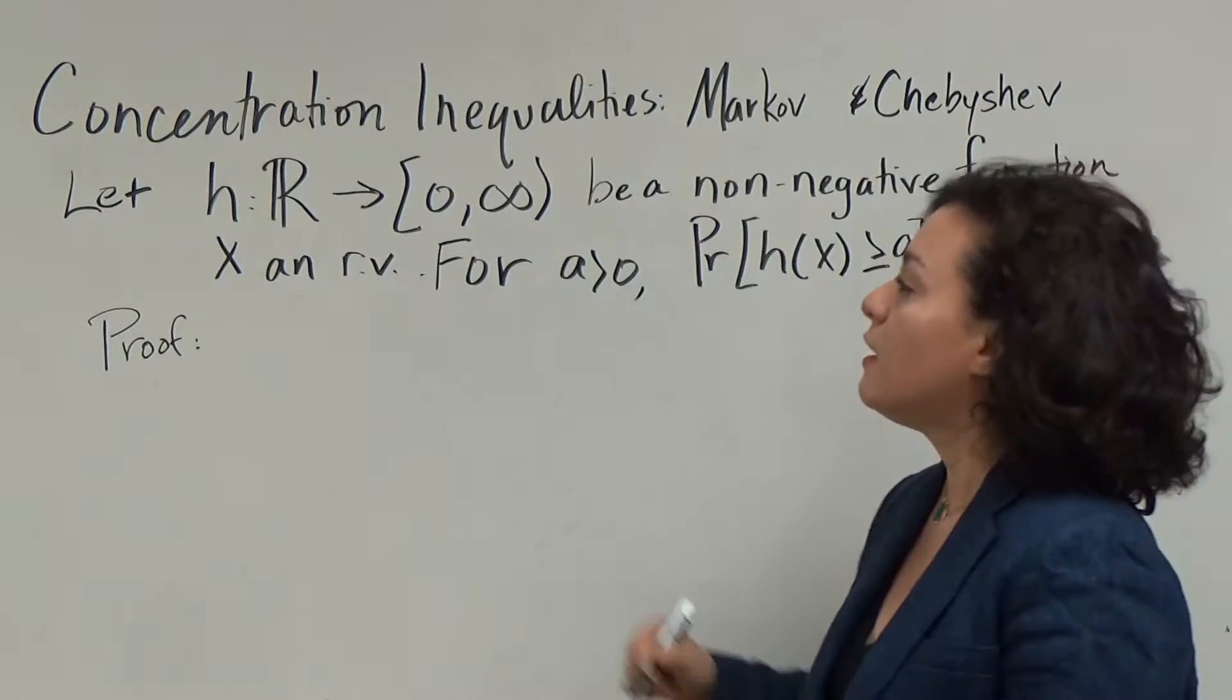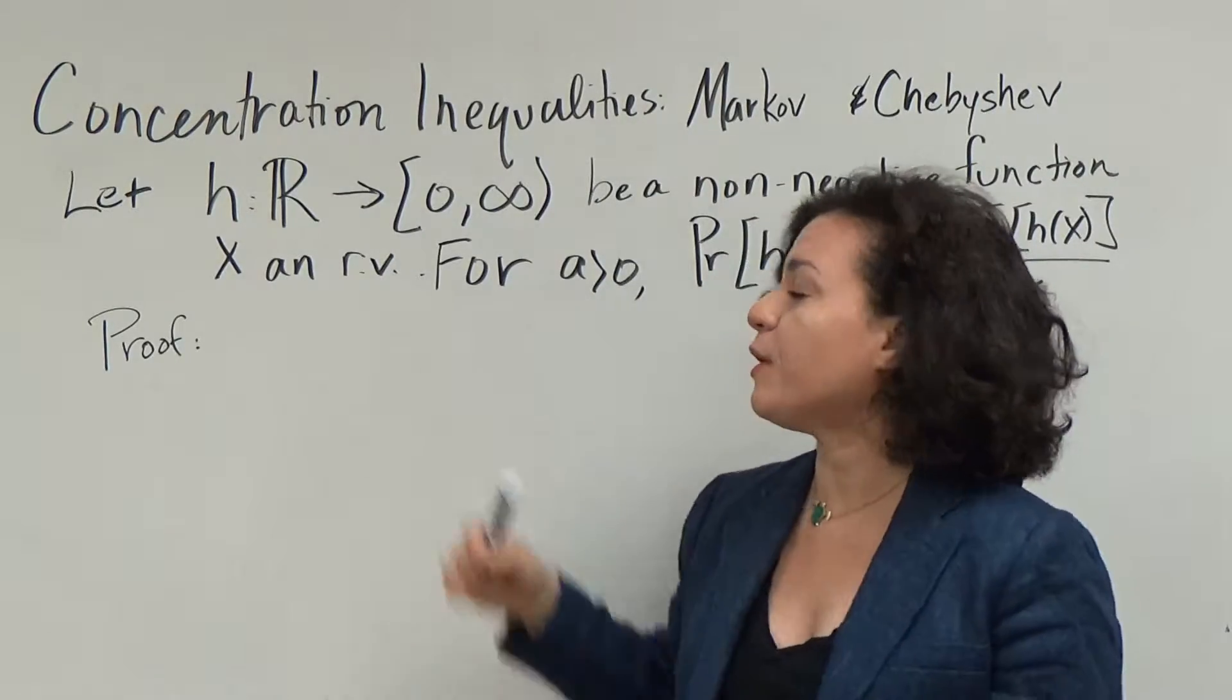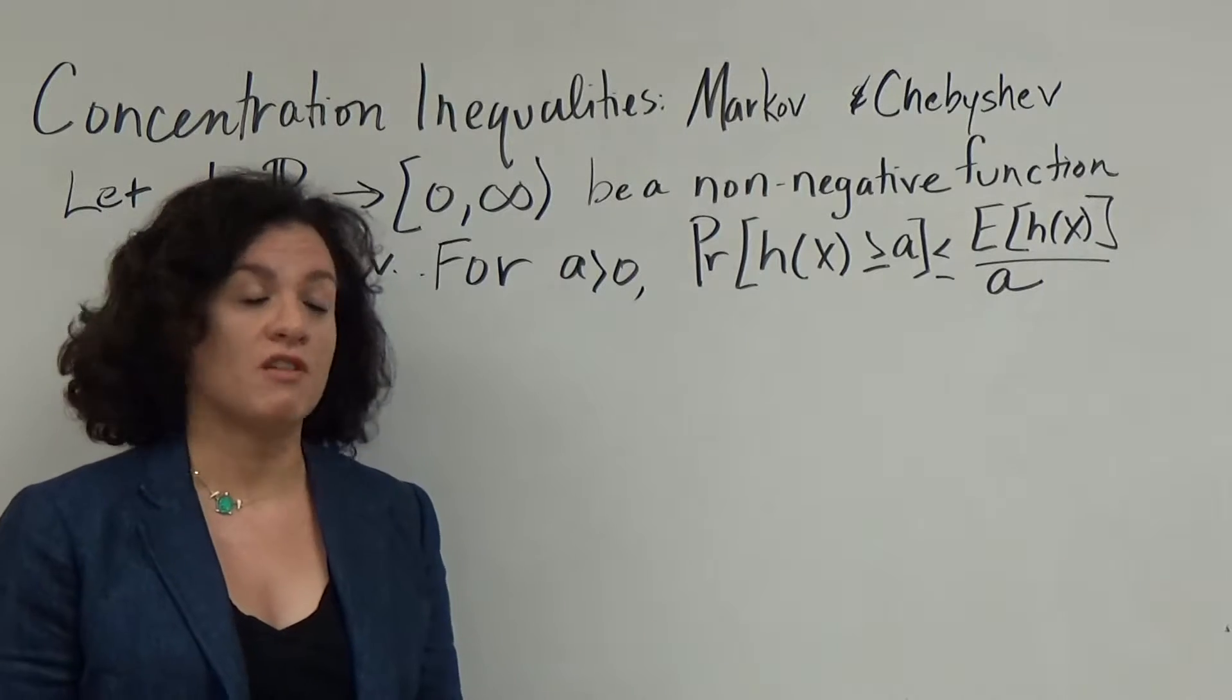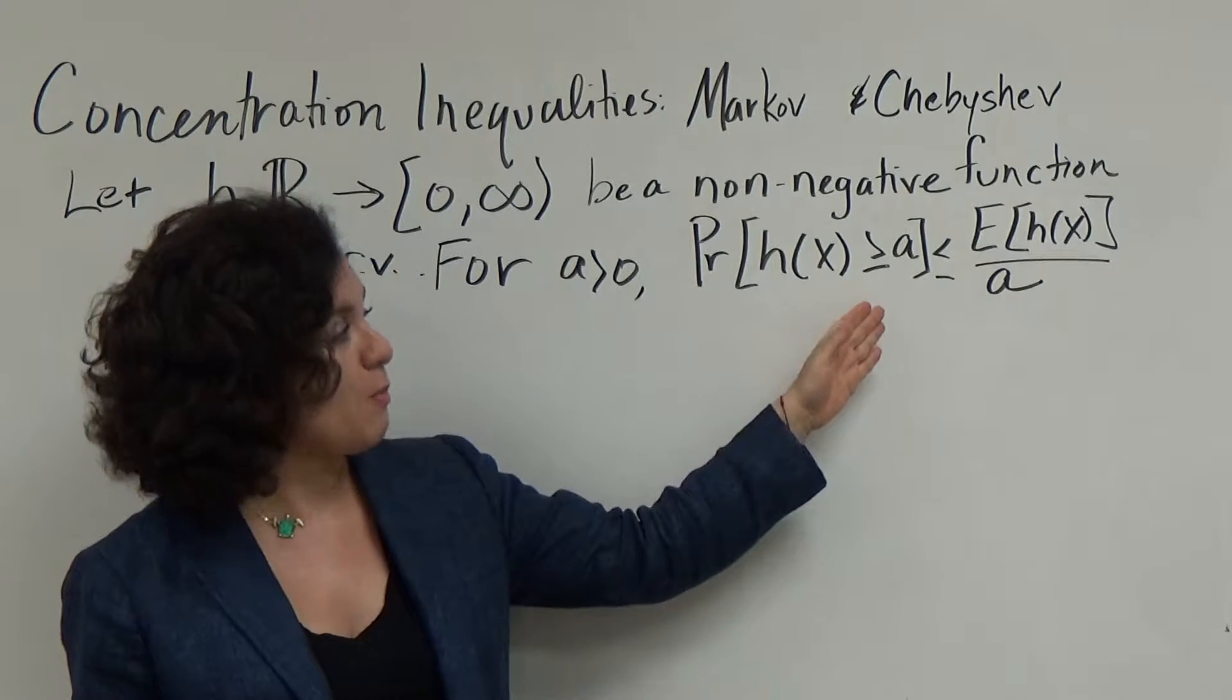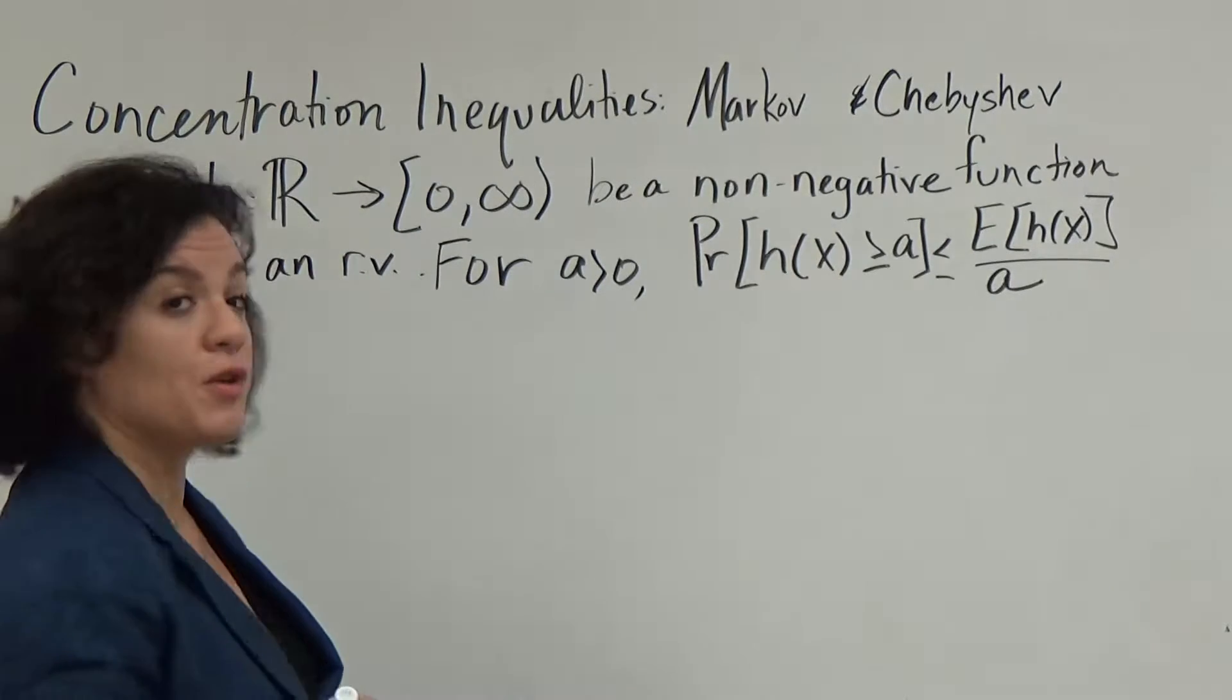So now for the statement. Let h be a non-negative function and x a random variable. For any a greater than 0, the probability that h(x) is greater than or equal to a is bounded above by the expectation of h(x) divided by a. So now for the proof.